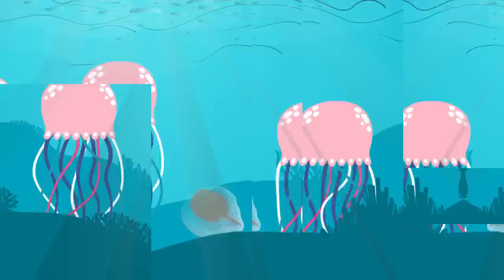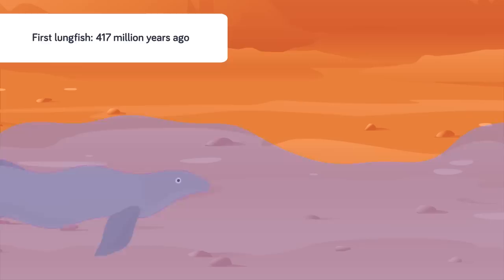Then around 417 million years ago we have another hugely important event, when something called the lungfish appeared. They had a set of lungs that allowed them to breathe out of water, unlike other fish. If their water source dried up they could survive, a huge evolutionary advantage.